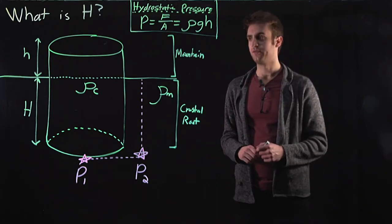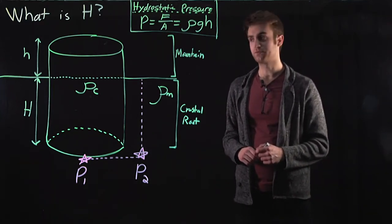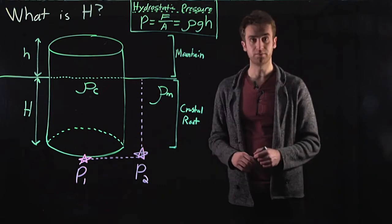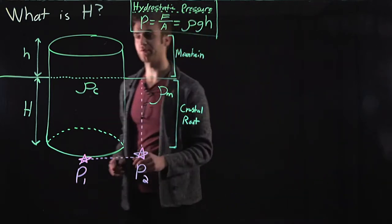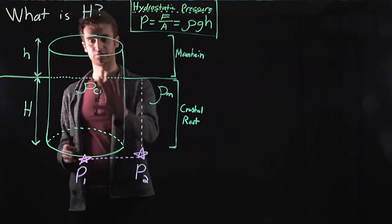This problem asks us to find the depth at which the crustal root sinks into the mantle at isostatic equilibrium. So let's come back over here to our continent. We're going to model our continent as a cylinder.